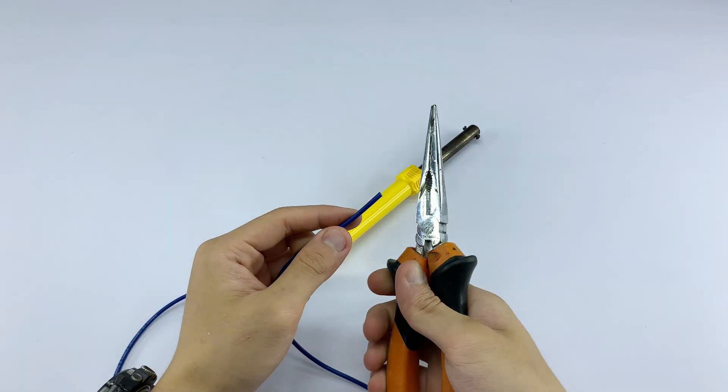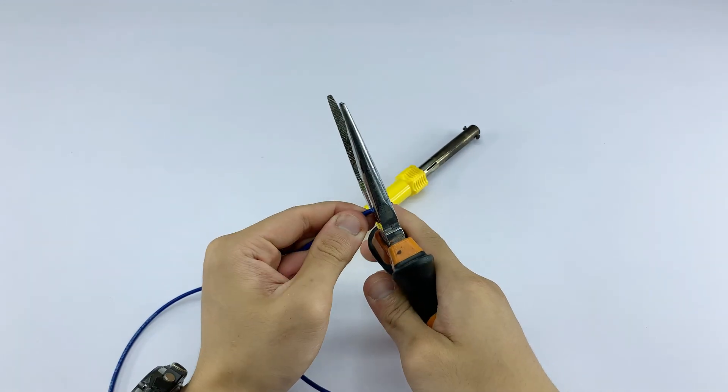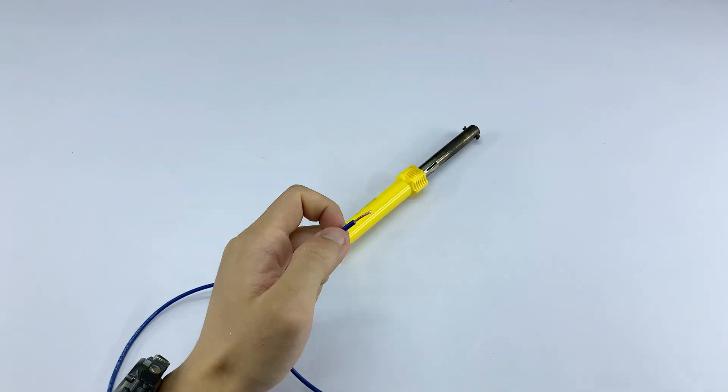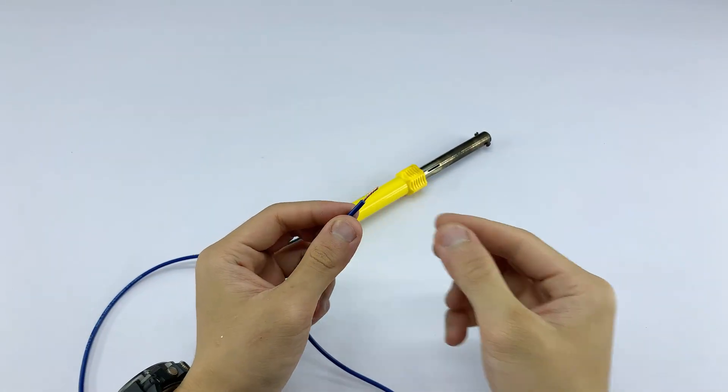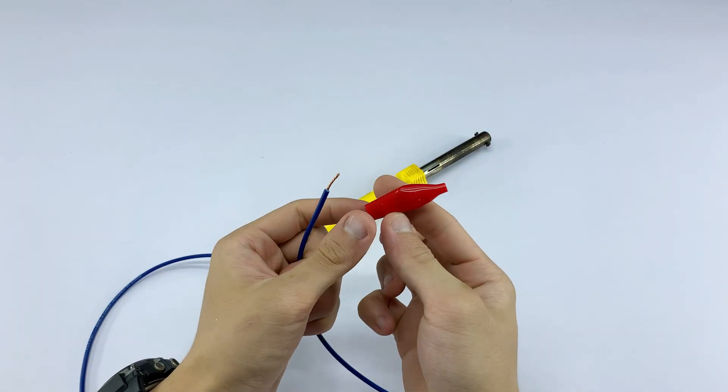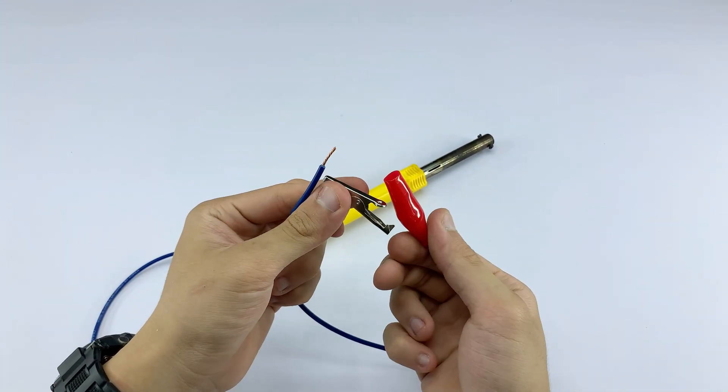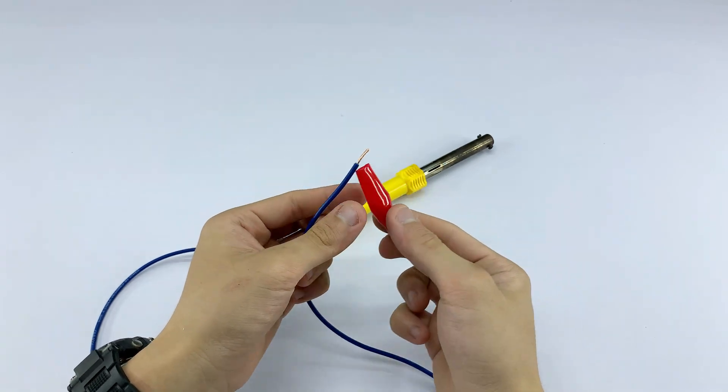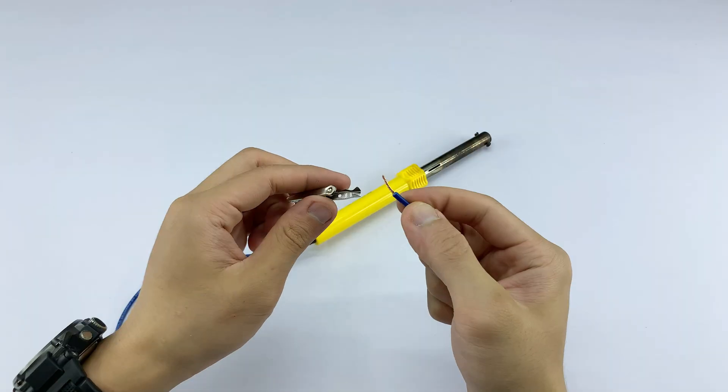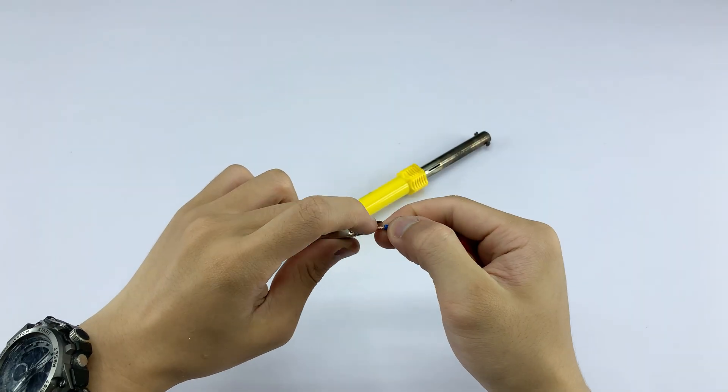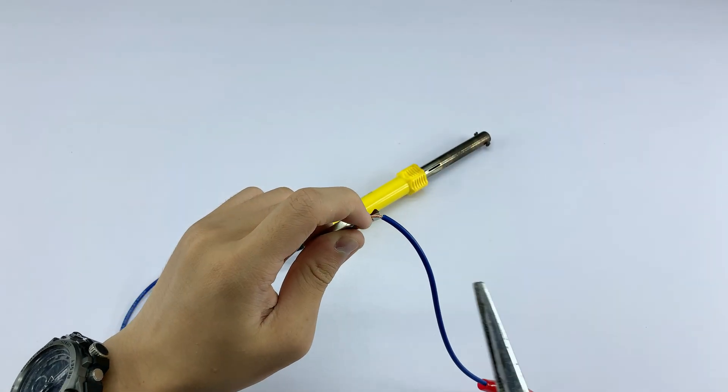I'm now stripping the other end of the blue wire to prepare it for connection. I'm attaching a red alligator clip to one of the exposed wire ends, which will serve as one of my power connections. This will allow us to connect it to a power source easily, without needing a traditional wall outlet.